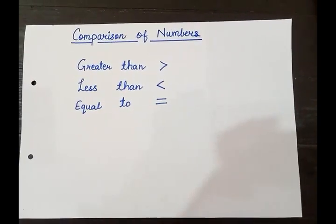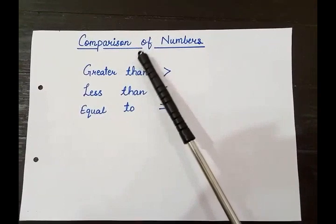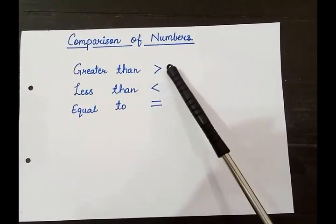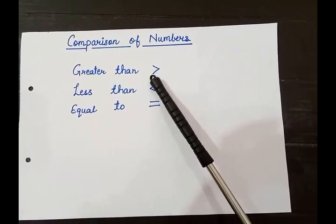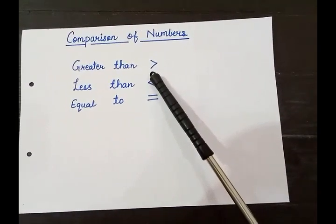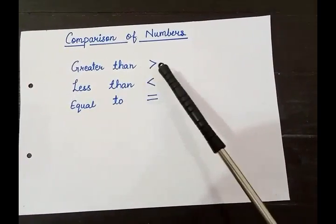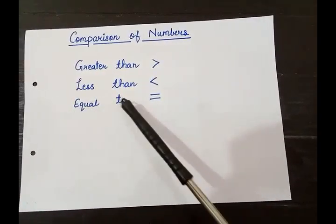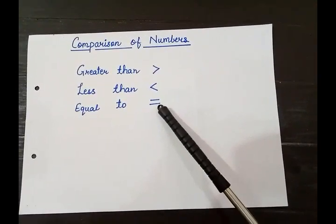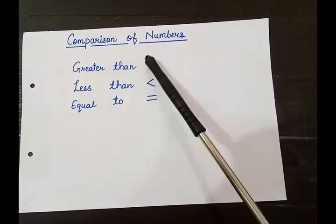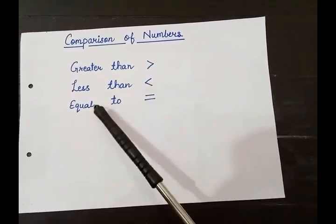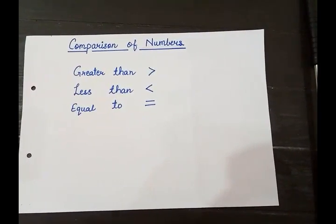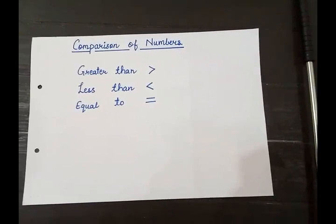Our next topic is comparison of numbers. Greater than — this is the sign of greater than. Less than — which sign is this? Less than. Equal to — which sign is this? Equal to. I will show this with a practical implementation so that you can understand it easily.